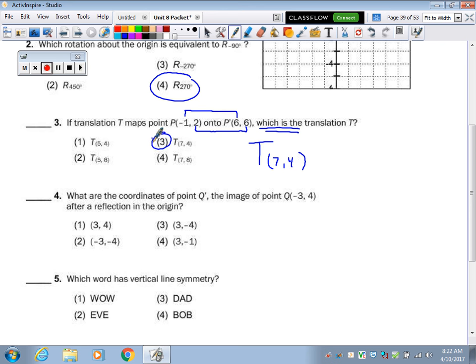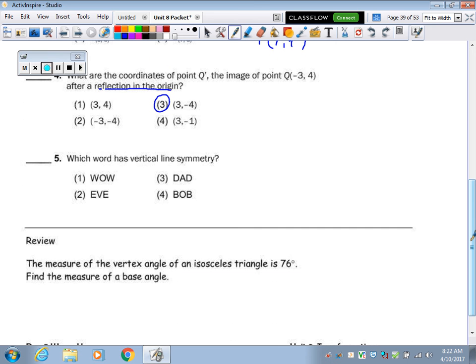Reflection in the origin. This is one that I de-emphasized. So, that's reflecting it through the origin, and I didn't show you that one. That's my fault. Vertical line symmetry, meaning if I fold the word down the middle like that, it will be symmetric. That's the only one that will work. Dad and Bob and Eve, if you fold it, the D will be going backwards, the B will be going backwards.